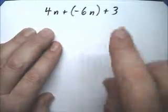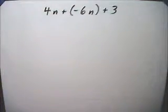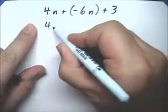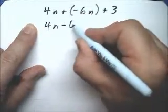We have variables in this and will be expected to combine like terms. First I'll get rid of the double sign so I can see more clearly what I have.